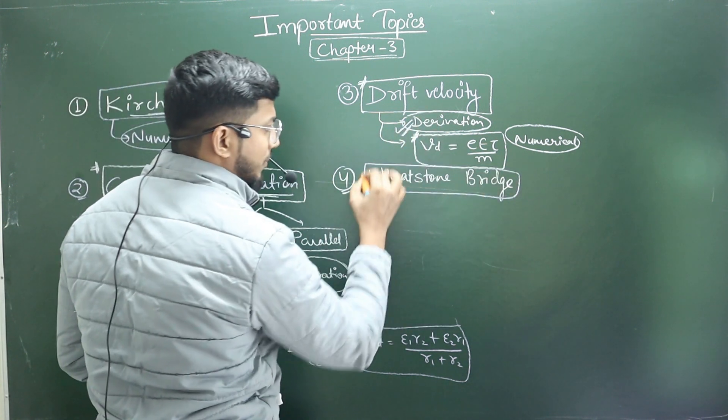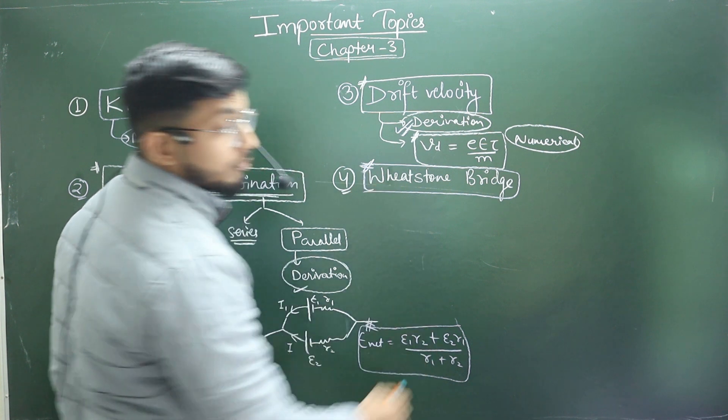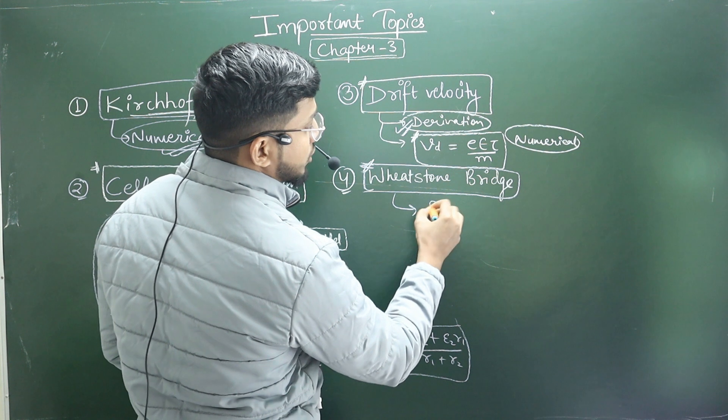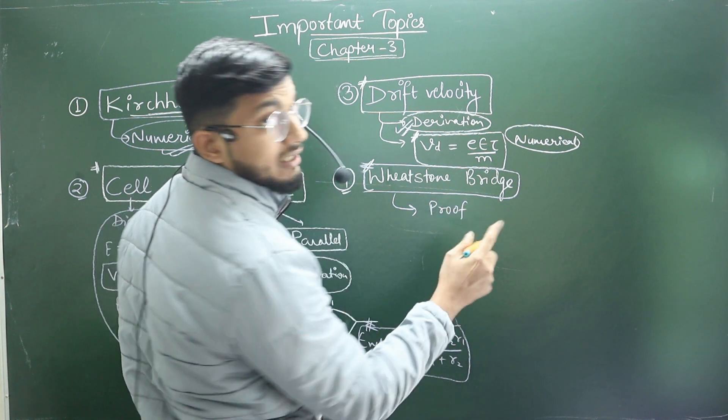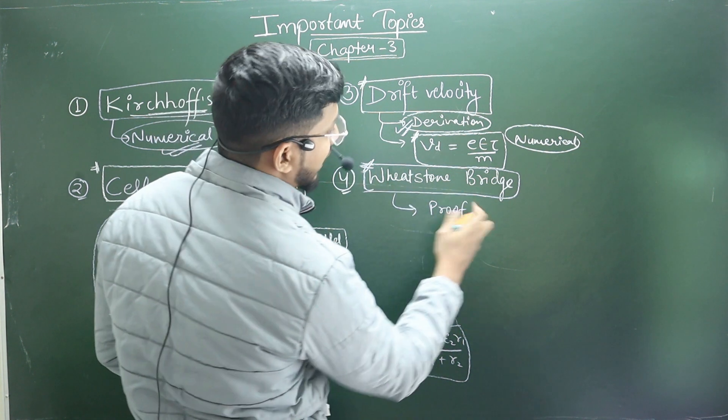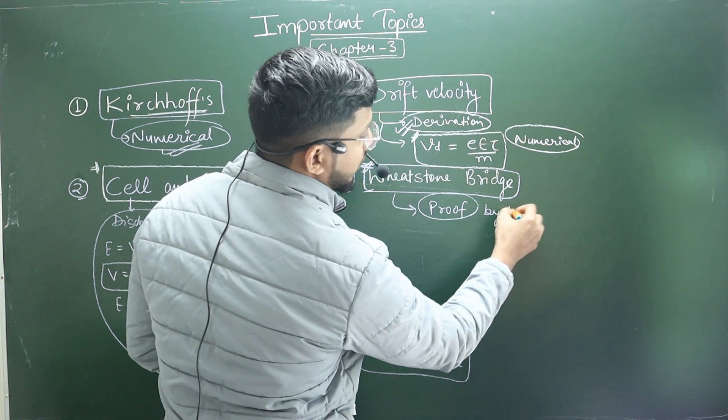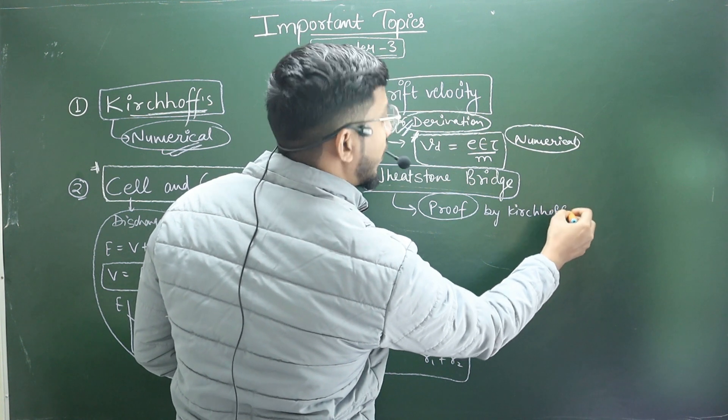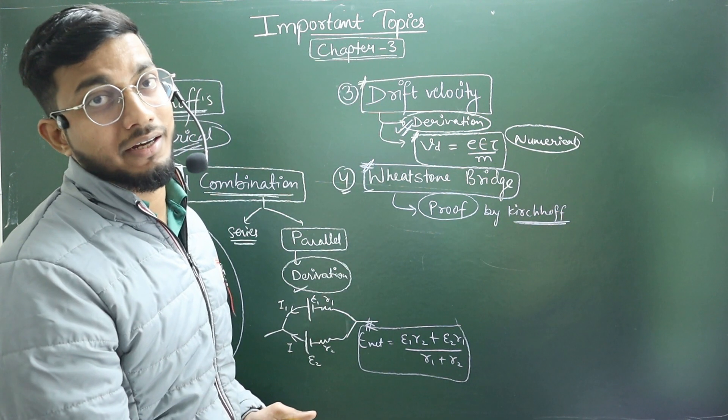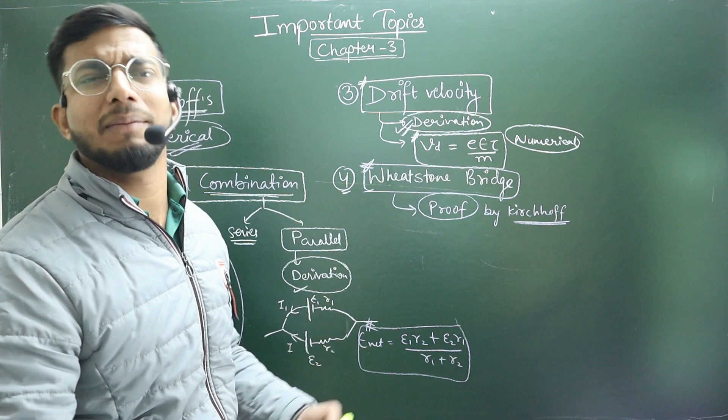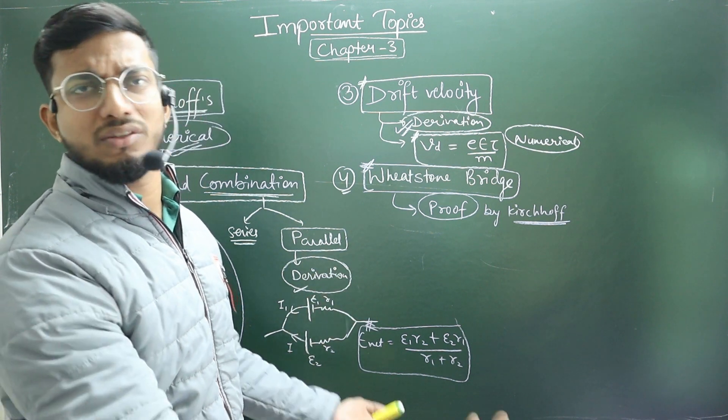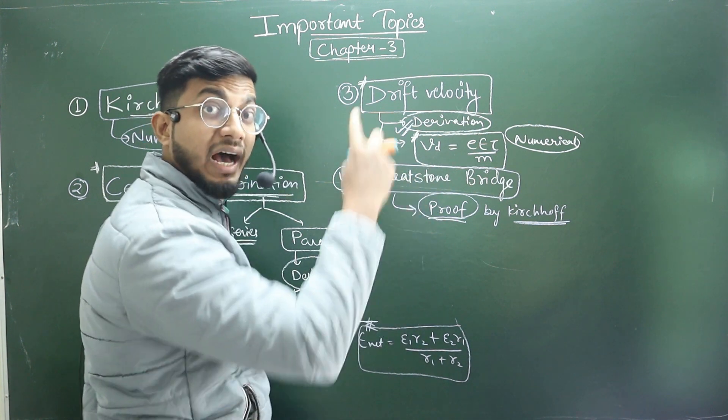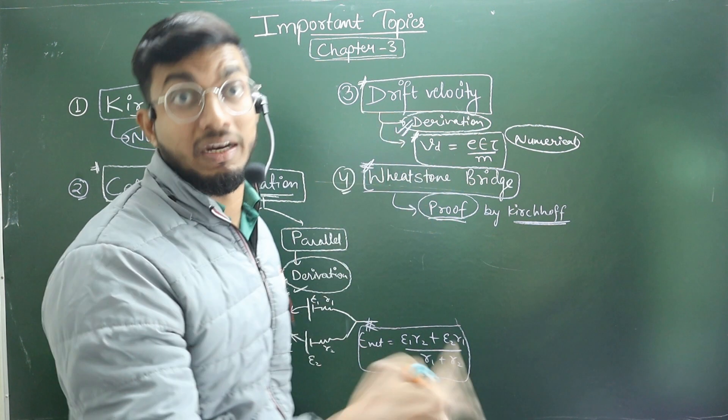The second and last topic I will say is Wheatstone Bridge. Wheatstone Bridge is in this year. And that's why I'm saying that if you want to take 90-95 plus, then prove it. Proof comes by Kirchhoff Law. This is 2-3 ways, but do it by Kirchhoff. Because if you have written in an exam that you have to do it by Kirchhoff, then you won't do the rest of your work. And if you have written in a proof, then you want to do it by Kirchhoff. Do it by Kirchhoff, do it by basic rule. That's why Kirchhoff is a proof in which you have to prove that R1 upon R2 is equal to R3 upon R4.